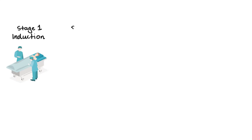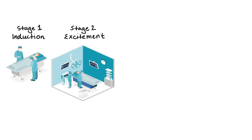The first stage is known as induction — a period during which the patient goes from a state of consciousness to a state of unconsciousness. The second stage is known as excitement. At this stage, depression of inhibitory neurons in the CNS leads to increased excitement, involuntary muscle movement, increased heart rate, blood pressure and respiration.